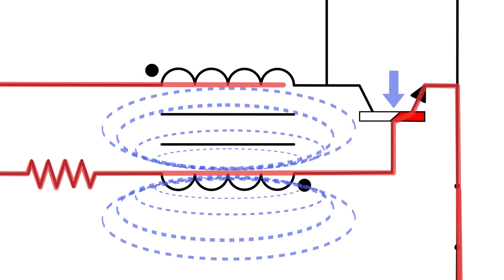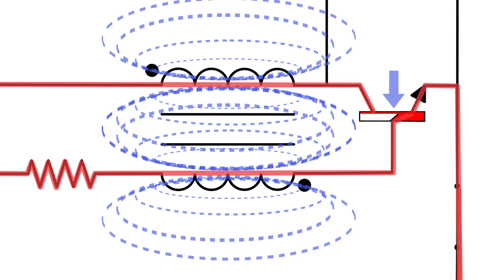Some electricity can now flow through the second coil and through the transistor. As electricity flows through the second coil, its magnetic field induces a voltage in the first coil. This opens the collector emitter channel even further, allowing more electricity to flow through that channel.